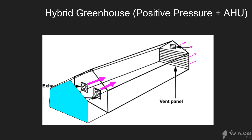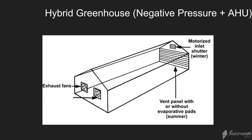You can use your positive pressure system when the outside air is conducive to your desired set points, or turn it off and use an air handling unit mechanical system when that's more appropriate. The same applies to negative pressure — run it when the outside air is helpful to what you're trying to achieve inside, and when it's not, shut it off and use the mechanical system.